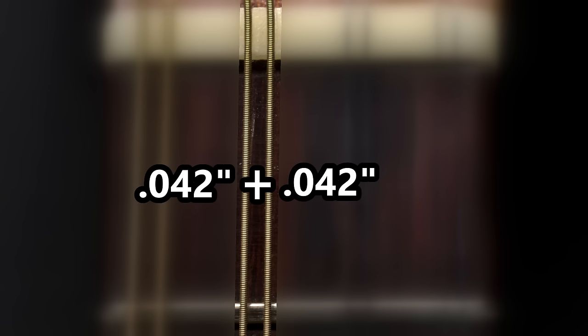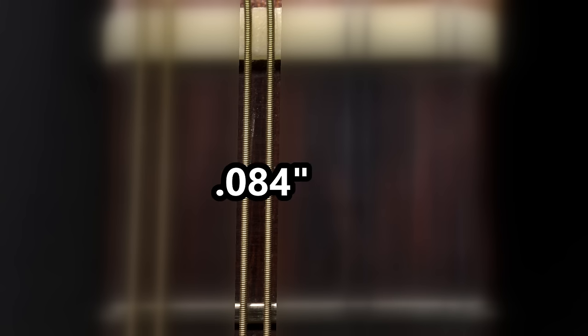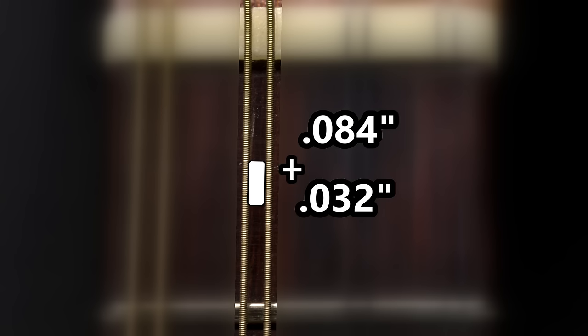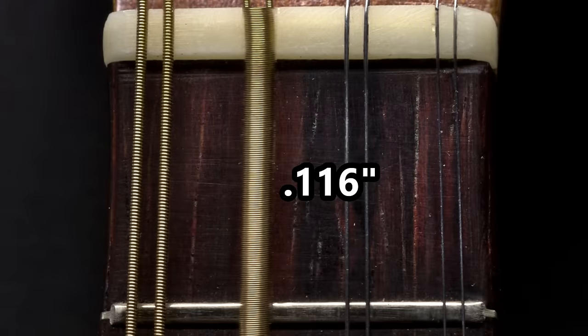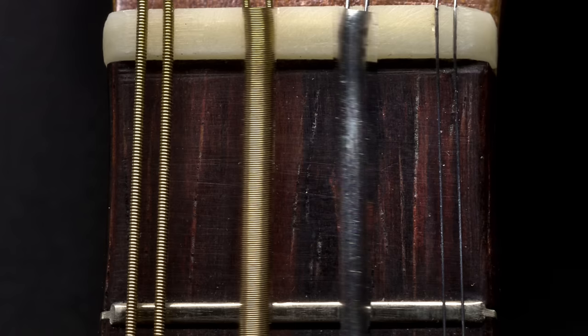For example, let's say these mandolin strings are 42 thousandths each, and I used a 32 thousandths feeler gauge as a fence between them. 42 thousandths plus 42 thousandths would be 84 thousandths, then 84 thousandths plus 32 thousandths would give us a grand total of 116 thousandths. Again, remember, the total of all those measurements added together can be thought of as a big single string. Solve for B by treating the remaining inner strings the same way, then proceed with the formula.